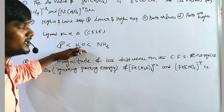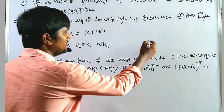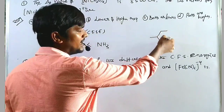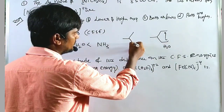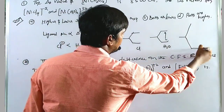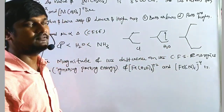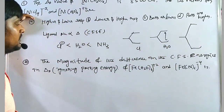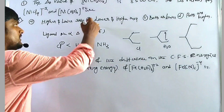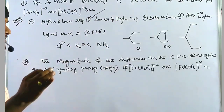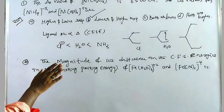In these two cases, water is the reference at 8500 cm⁻¹. Ammonia is higher than water, but chlorine is lower than water. So chlorine gives a lower Δo, ammonia gives a higher Δo. The answer is option B — very easy. Whenever you see the question, within 5 to 10 seconds you can answer it.